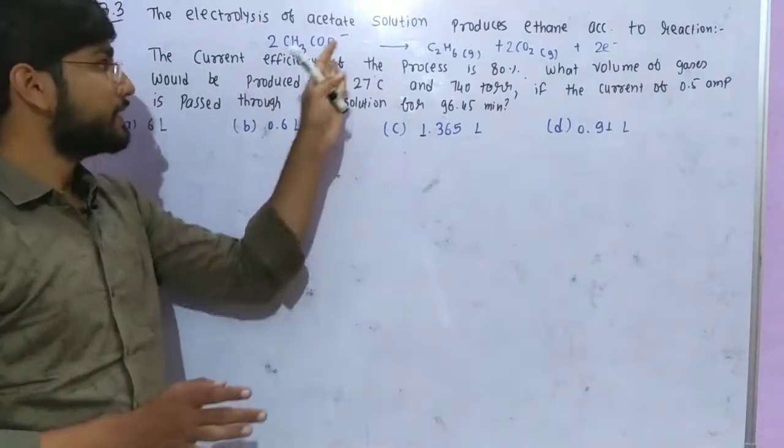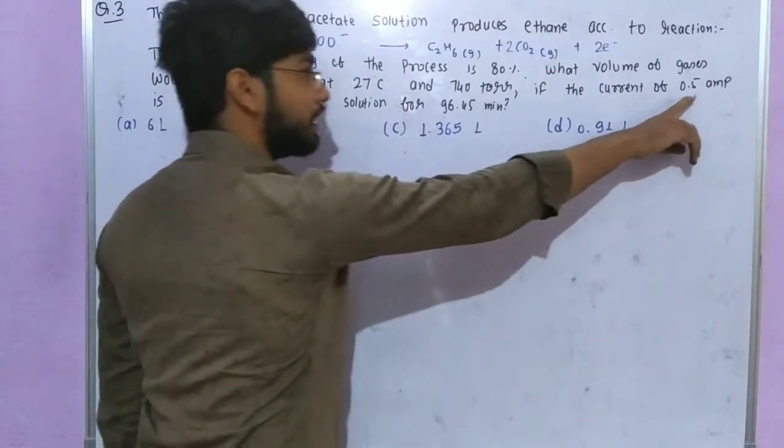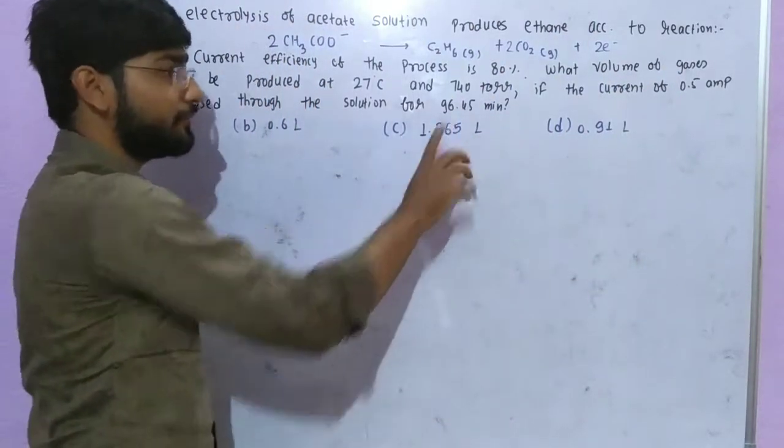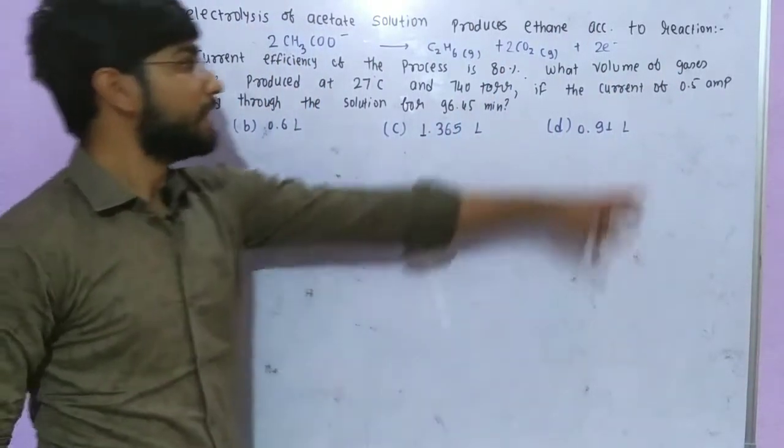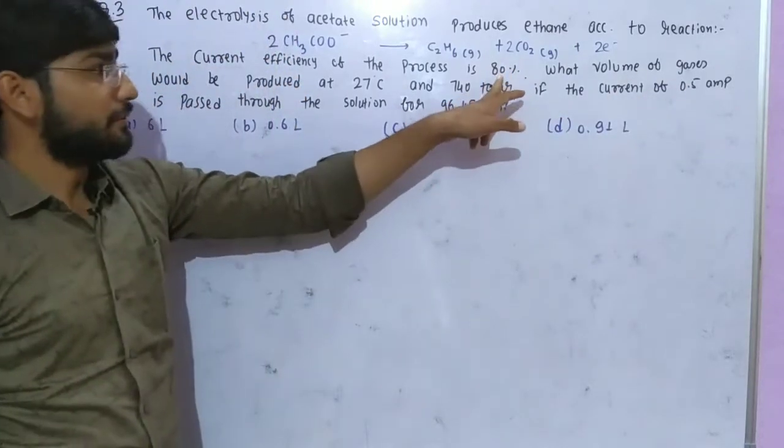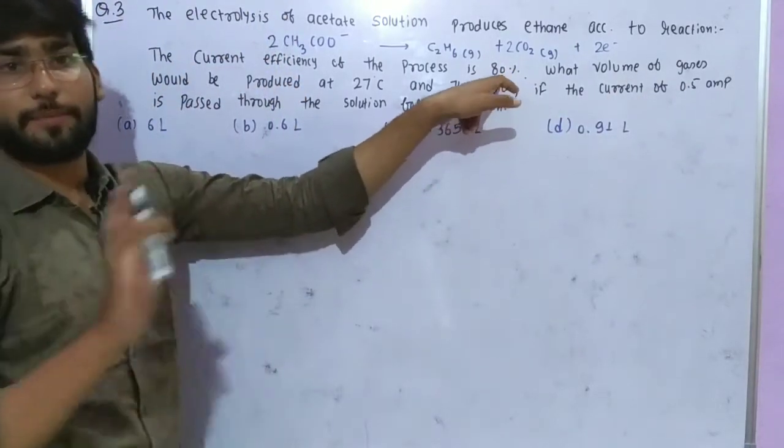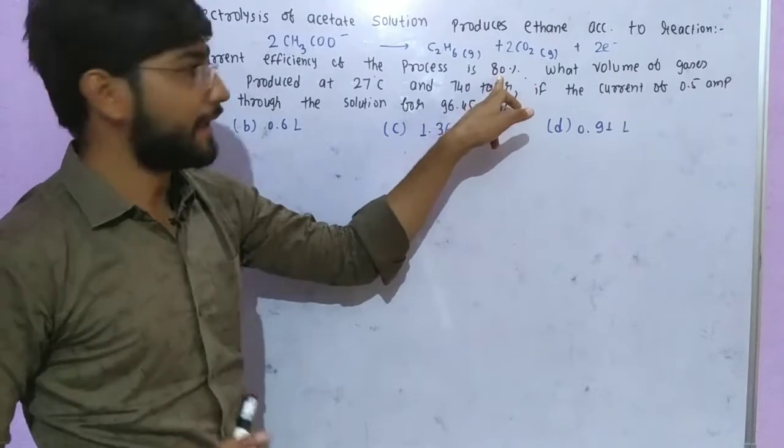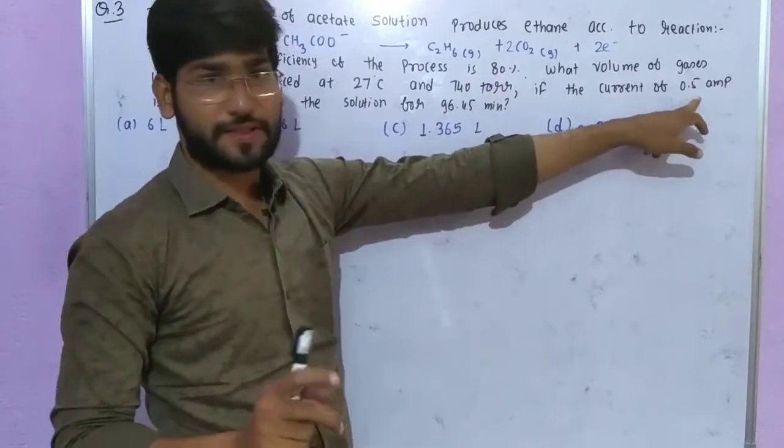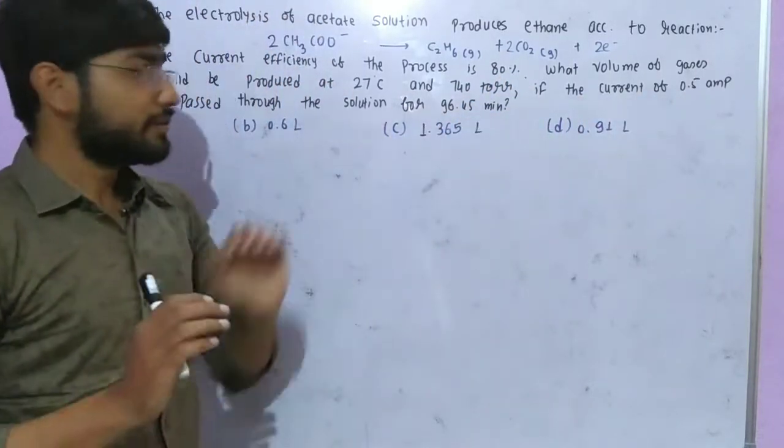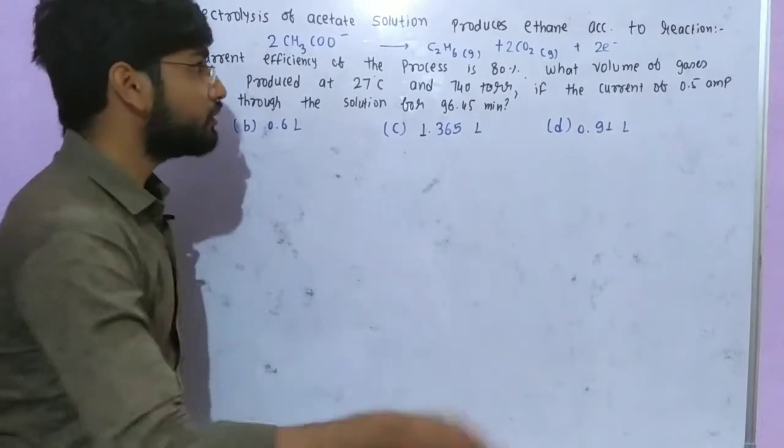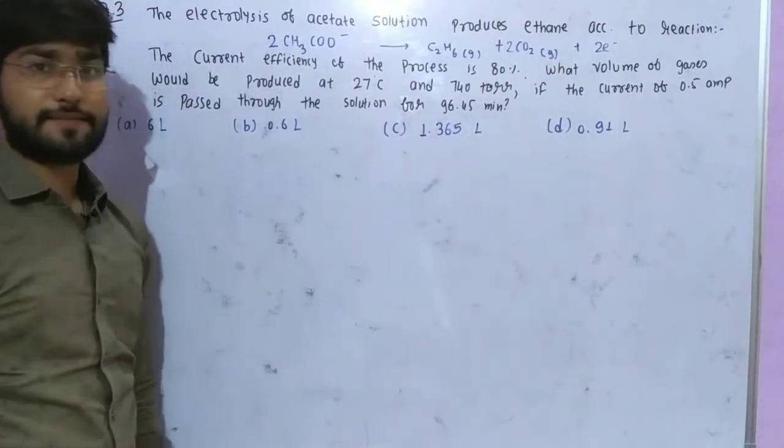This solution has 0.5 ampere current for 96.45 minutes. This current has 80% efficiency. This is 0.5 ampere. The current passed through for this time. This temperature and pressure can be used to find the volume of total gases.